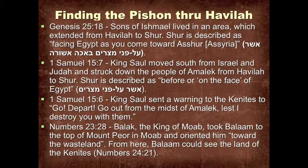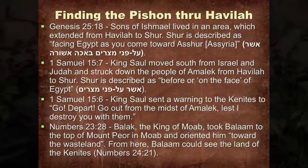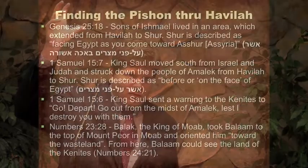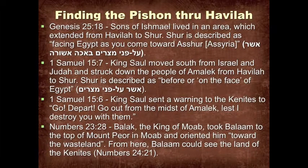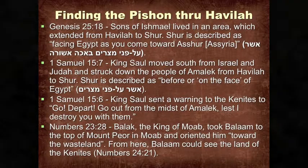We also have the same reference — Shur on the face of Egypt — in 1 Samuel 15:7, where King Saul is moving down with the tribes of Judah and then west to attack the people of Amalek. In order to move down and then east, he has to go through the northwestern part of the Sinai Peninsula. King Saul also makes another tell-tale reference, which we talked about in the last lecture: he warns the Kenites to depart from the midst of Amalek, lest he destroy them. The Kenites are located in the northwestern part of the Sinai Peninsula.